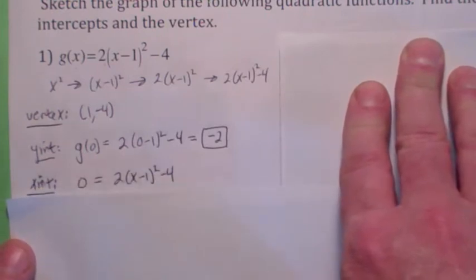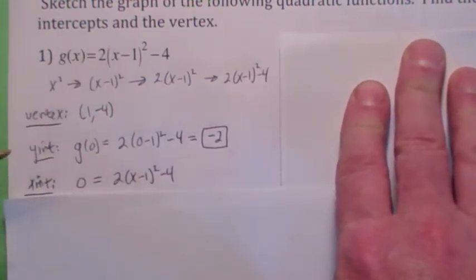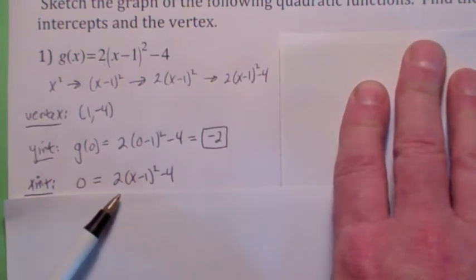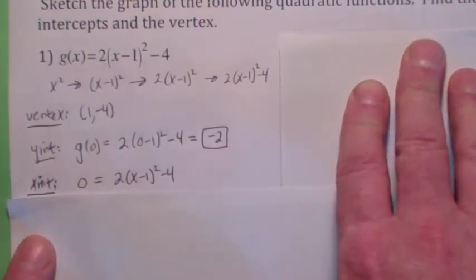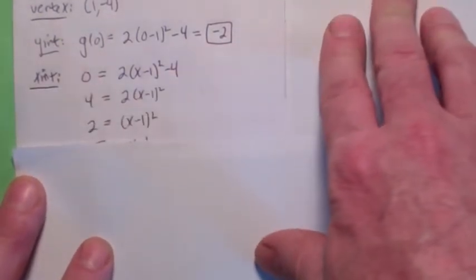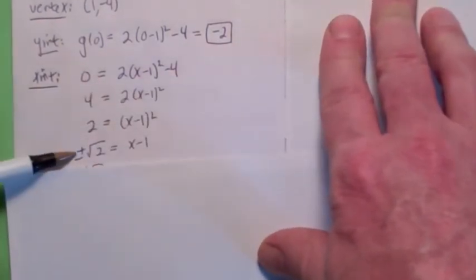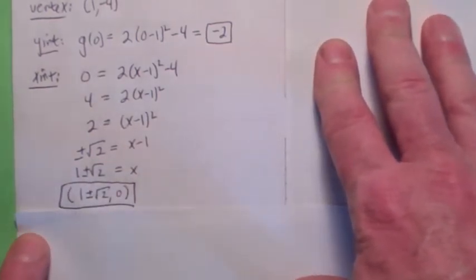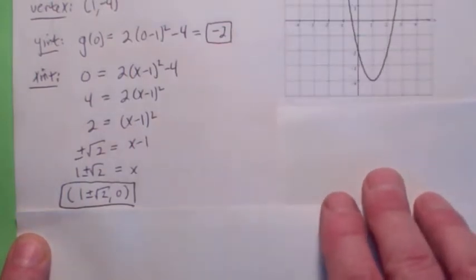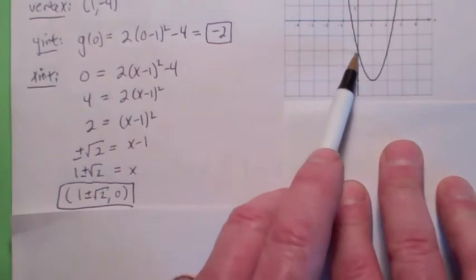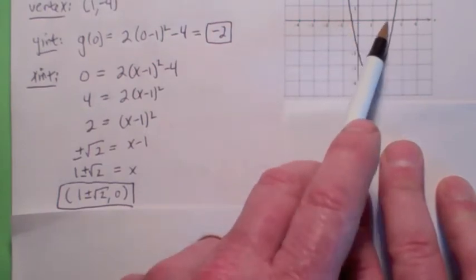The x-intercept is where most of the work is. However, if it's written in this form, it's easier to solve this equation equal to zero rather than multiplying it out and using the quadratic formula. All you have to do is add 4, divide by 2, take the square root — don't forget plus or minus — and add 1 to both sides. So the x-intercepts are 1 plus or minus square root of 2, comma 0. The graph has vertex (1, −4), y-intercept −2, and x-intercepts at 1 ± √2, 0.